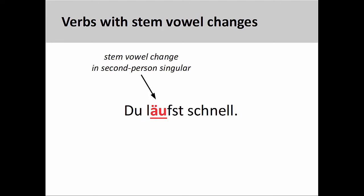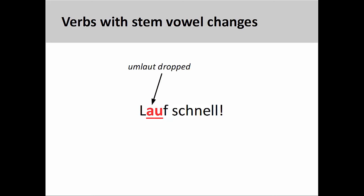If, however, this stem-vowel change involves the addition of an umlaut, this umlaut is dropped in the informal imperative. So, for example, the stem-vowel in the verb laufen, meaning to run, changes from -u to -ü (umlaut u) in the second person singular: du läufst schnell — you run quickly. In the imperative, however, the umlaut would be dropped from the verb stem: lauf schnell — run quickly.